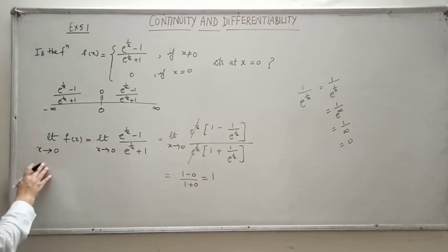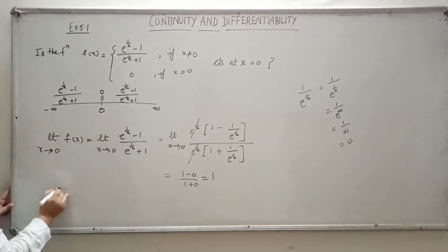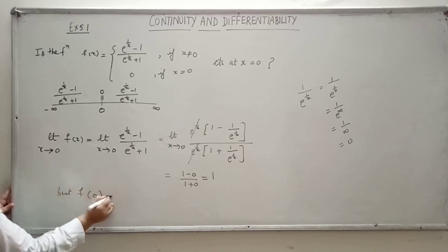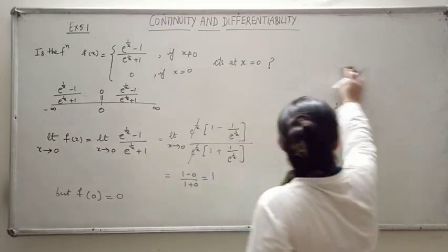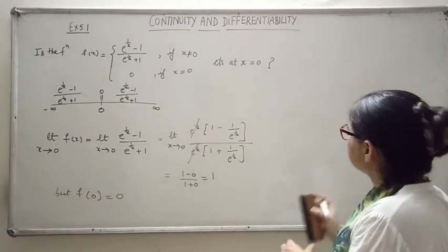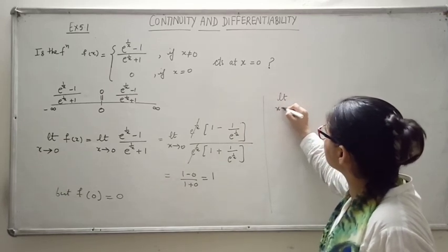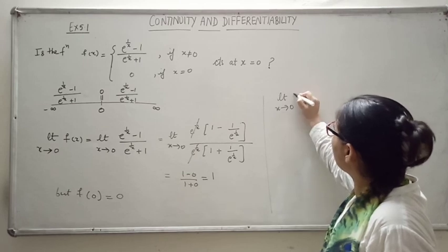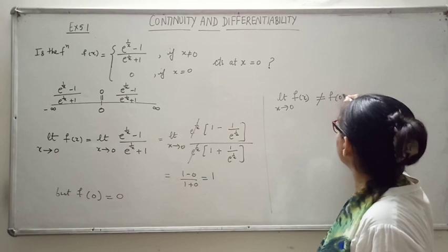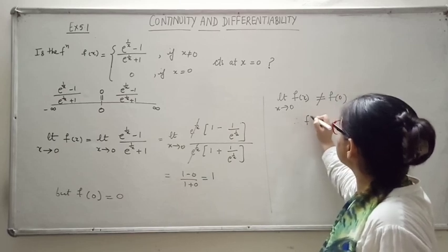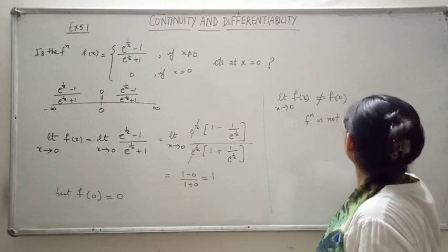So the limit as x tends to 0 of f(x) is 1. But f(0) equals 0. Since the limit of f(x) as x tends to 0 is not equal to f(0), therefore the function is not continuous at x equals 0.